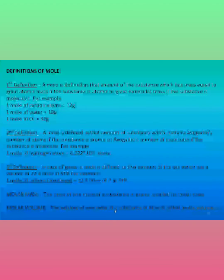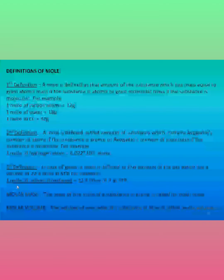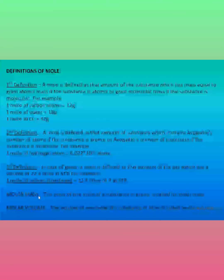The third definition is related to gases. A mole is defined as that amount of gas which has a volume of 22.4 liters at STP. STP means standard conditions of temperature and pressure. For example, one mole of carbon dioxide in terms of gases is 22.4 liters at STP.